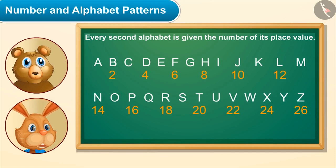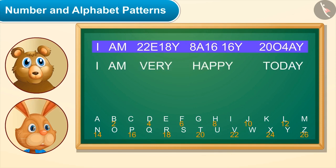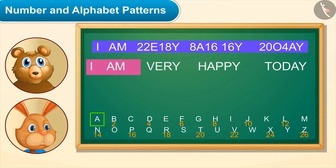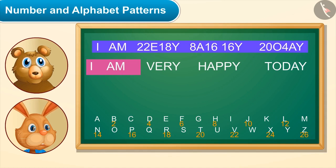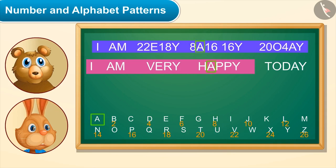I have given every second alphabet its place value as a number. Say something and I will write it in code. 'I am very happy today.' Here, take this. I wrote down whatever you said. I have not given numbers to I, A, and M — they are written as they are. For the next word 'very,' I have written V as 22, E as E itself, R as 18, and Y as Y itself.